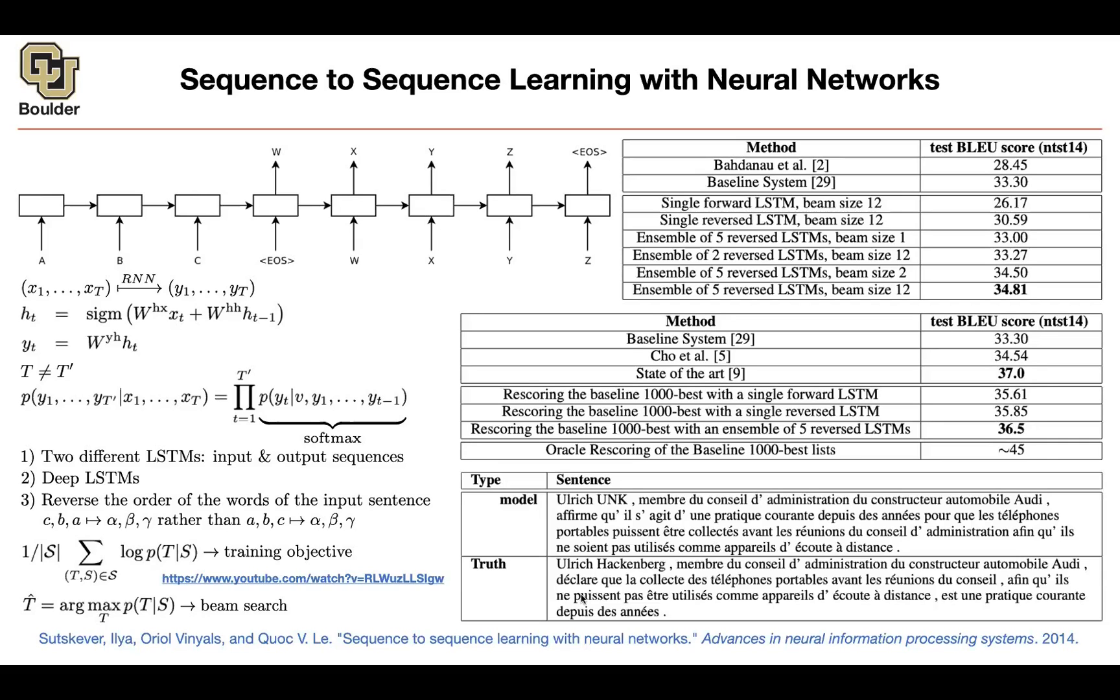And here is an example of the translation that you're going to see. So that's the ground truth. That's what the model is predicting. And that's not a bad translation if you want to look at it qualitatively. Any questions? So what is the message that I want to convey? Is that people are working really hard or have been working really hard to beat the previous state of the art.